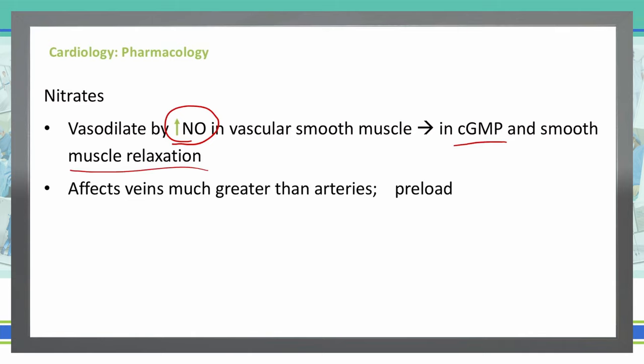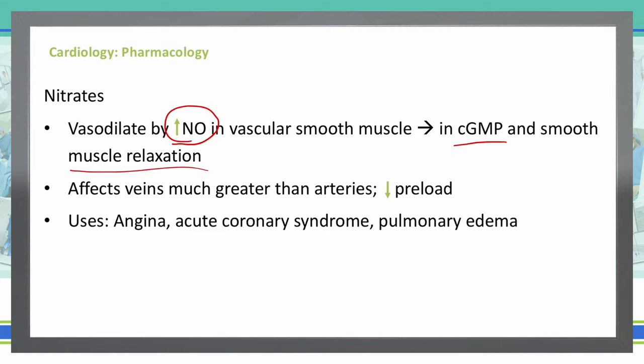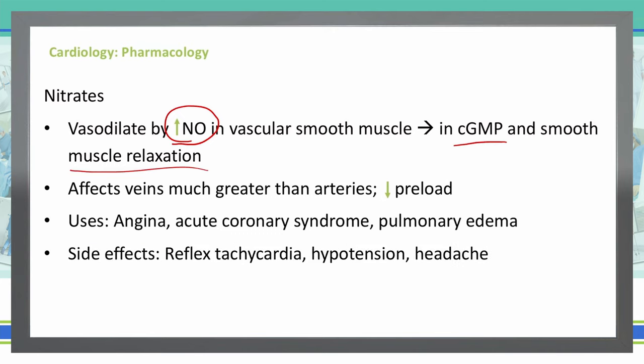Nitrates affect the veins much greater than the arteries. So what is that going to do to our preload? It's going to decrease our preload — if we're affecting the veins prior to the heart, our preload will go down. We use nitrates in angina, acute coronary syndrome, and pulmonary edema.